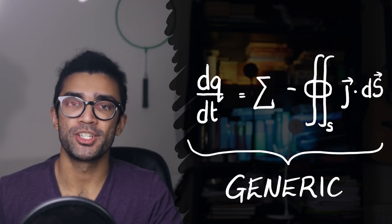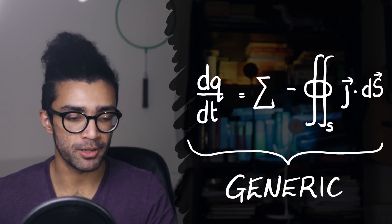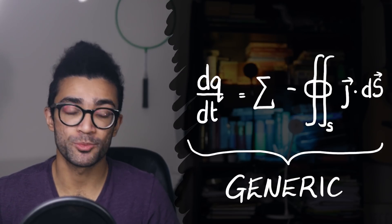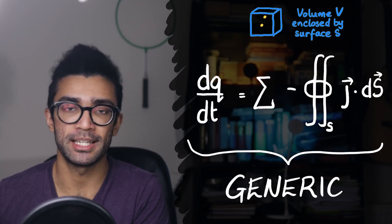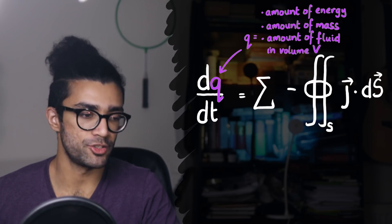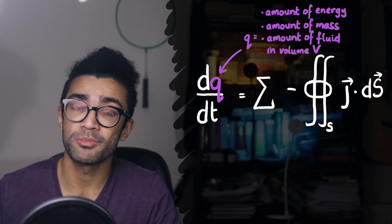It essentially measures the creation or destruction of some particular quantity, as well as the flow of that quantity either in or out of the volume that we're considering. Now, what we've seen so far is a generic continuity equation that can be applied to lots of different scenarios. And the scenario we saw it applied to was when we were studying the number of particles in our volume V. But it can also be applied to other quantities such as energy, mass, fluids that can flow, and so many more.